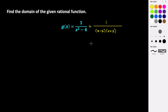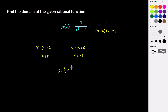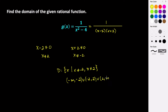We know that each factor individually is not allowed to equal 0, because if either factor was 0, the entire quantity would be 0. So we have two separate values to consider: x minus 2 cannot equal 0, and x plus 2 cannot equal 0. Solving each of these, we get that x is not allowed to equal positive 2, and x is not allowed to equal negative 2. So our domain is the set of all x such that x cannot equal negative 2 or x cannot equal positive 2. In interval notation: negative infinity to negative 2, union from negative 2 to positive 2, union from 2 to infinity.